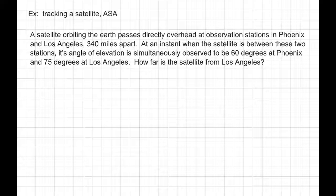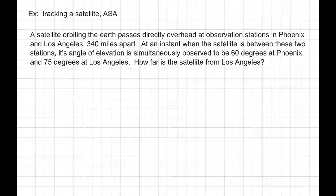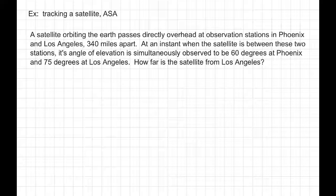A satellite orbiting the Earth passes directly overhead at observation stations in Phoenix and Los Angeles, 340 miles apart. At an instant when the satellite is between these two stations, its angle of elevation is simultaneously observed to be 60 degrees at Phoenix and 75 degrees at Los Angeles. How far is the satellite from Los Angeles?